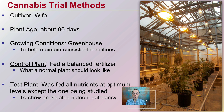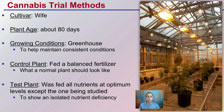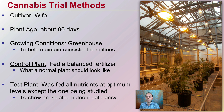This is the trial that was conducted. The cultivar used is Wife, a high-CBD cultivar. The plant age is about 80 days old, grown in a greenhouse to help maintain consistent conditions. Control plants were fed a balanced fertilizer, and the test plant was fed either a deficient amount of nitrogen or a toxic — not quite super toxic to kill the plant, but enough to produce a bloated appearance as you'll see with the nitrogen over-applied to those plants.